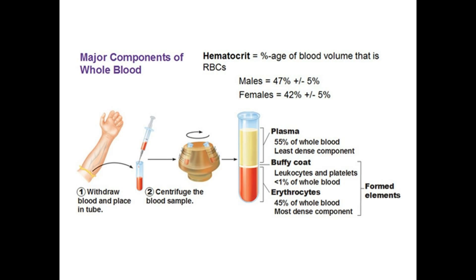Between the layers of plasma and erythrocytes there is a buffy coat consisting of leukocytes and platelets; the concentration of both these cells is less than 1% of whole blood. To measure hematocrit, venous blood samples are collected from the antecubital vein in the cubital fossa, transferred to a test tube, and placed in a centrifuge machine.